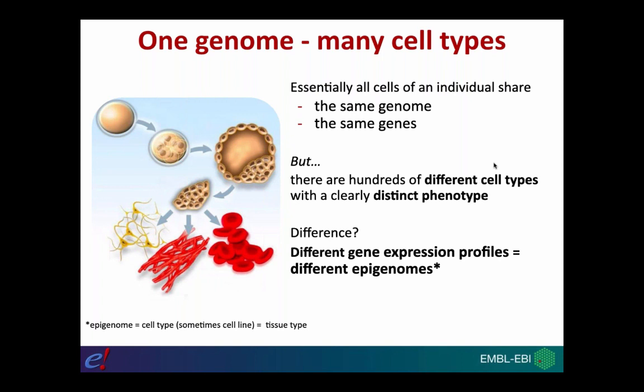The reason for the differences in these terminally differentiated cells is the fact that they express a different set of genes — they have different gene expression profiles. You might hear this commonly called an epigenome. An epigenome is just a gene expression profile, and different cells will express a different set of genes at different levels at different times, so they therefore have different epigenomes.